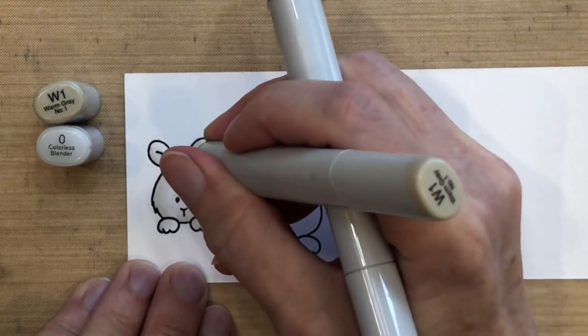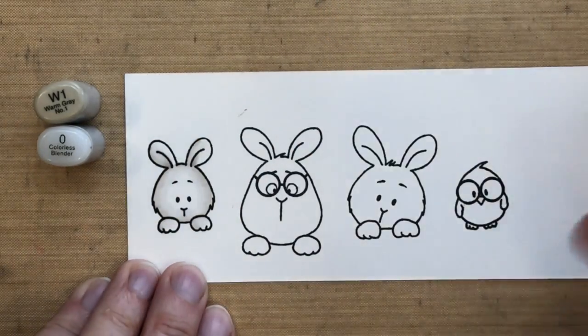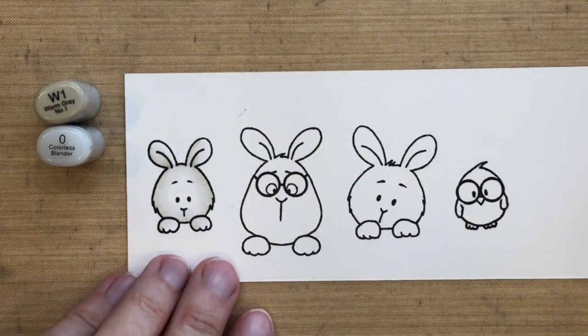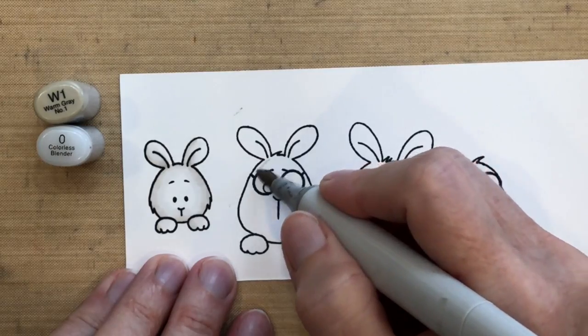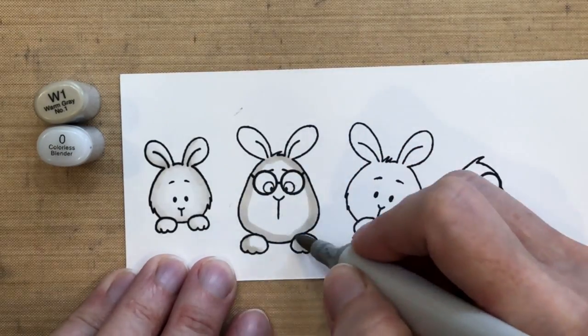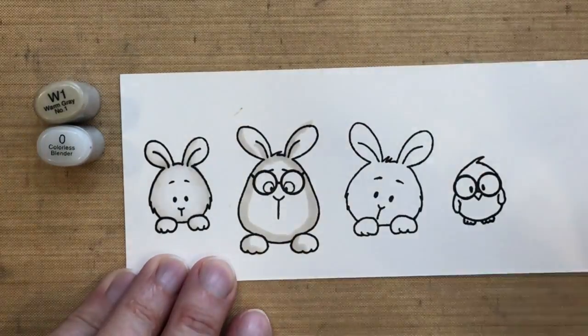And then I realized I probably should have put some shadow inside his ears where you could tell it's kind of the inside, and then I just took the zero blender on that. I'm going to move on and do this a little faster with these other two bunnies. I'm just doing the same exact thing I just did on the first one.